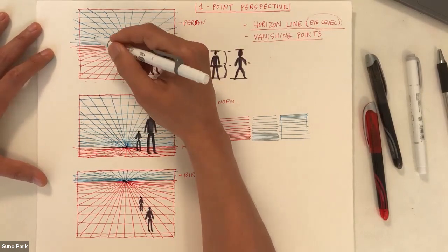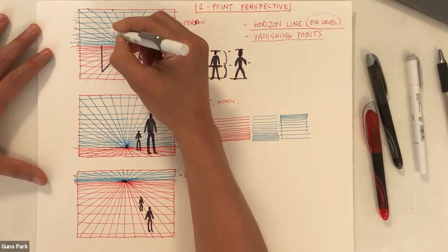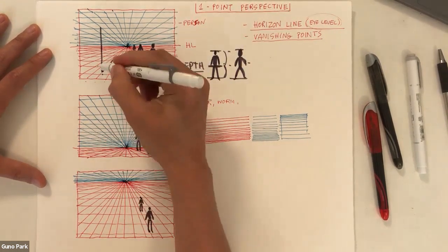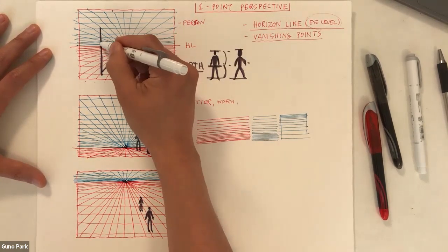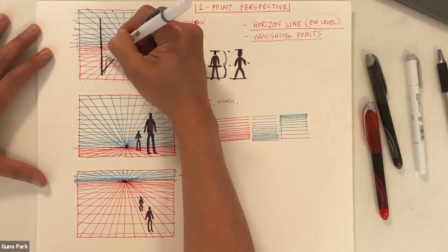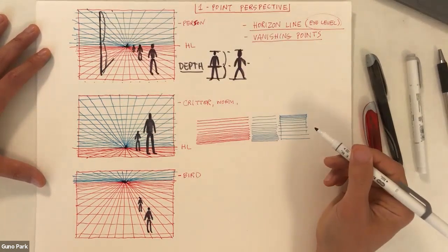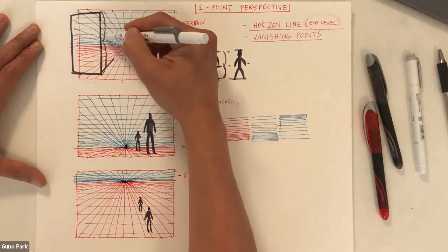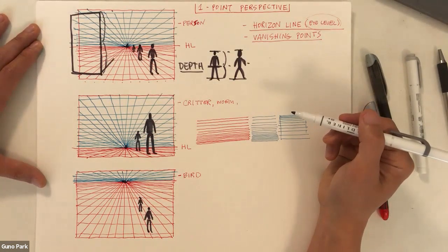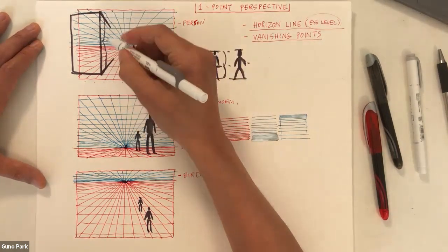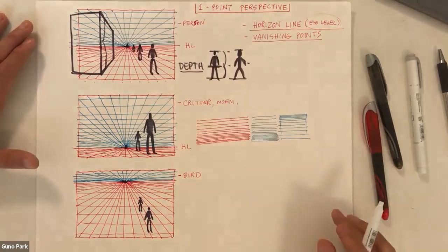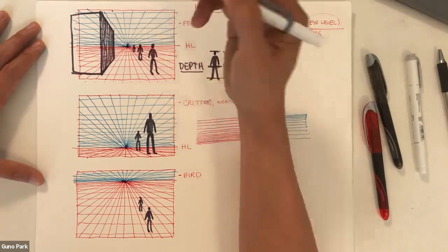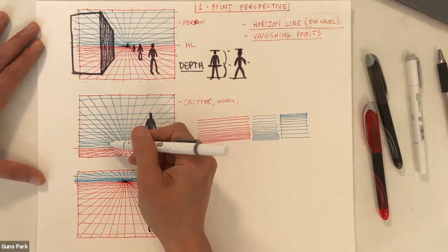Now let's draw some boxes or buildings in one-point perspective. Using the five-foot-ten person as reference, I can establish a wall height — double the person height is about 12 feet. I draw a wall facing us, follow the receding perspective lines, and add another line to create a box. I'll shade one side to clarify the shape. So now we have a big box in one-point perspective.